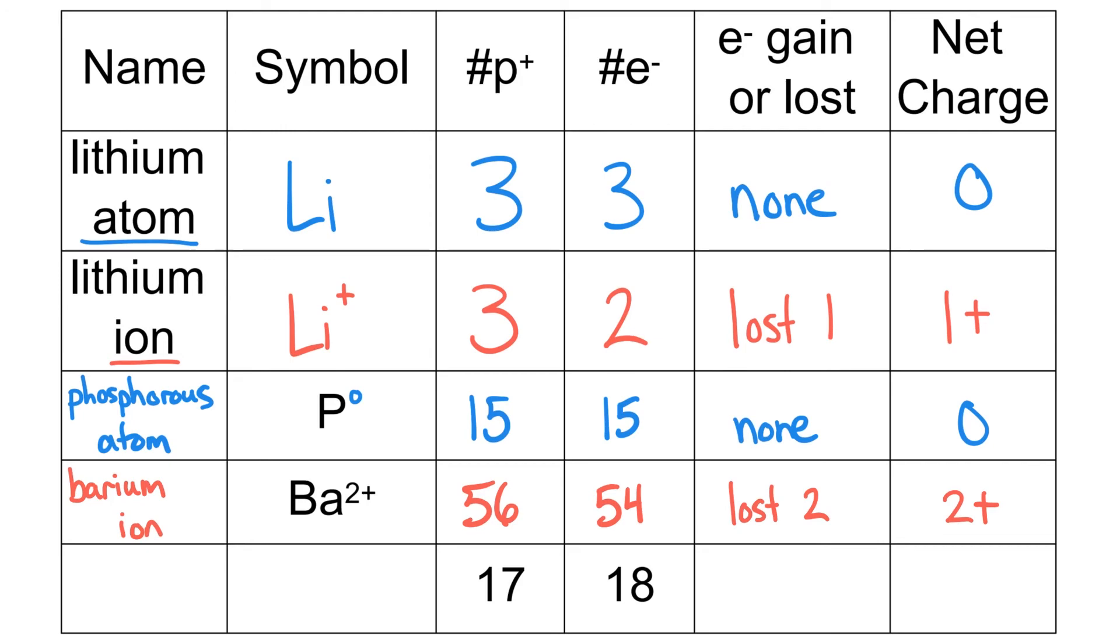For the last row, we know there are 17 protons and 18 electrons. From here you can solve it a couple different ways. I'm going to go first and say that there has been a gain of 1 electron. That's a 1- charge. There's one more electron than protons.